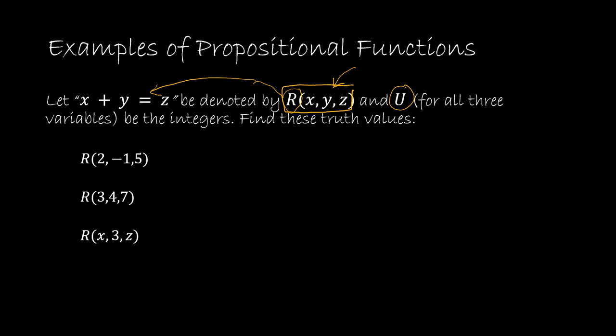So keep in mind right now this is considered a propositional function. Now that I've given x, y, and z each a value this is now a proposition. A proposition has a truth value of true or false so now I can find that truth value by replacing x with 2, y with negative 1, and z with 5. 2 plus negative 1 is 1. 1 does not equal 5 so this has a truth value of false.